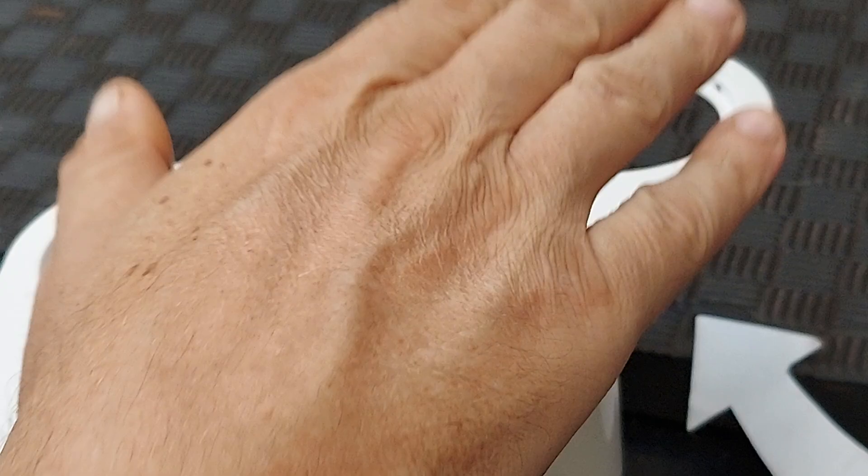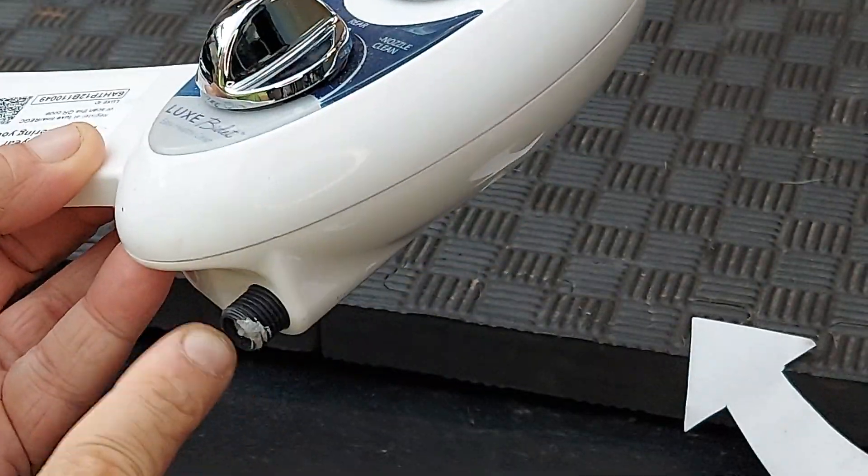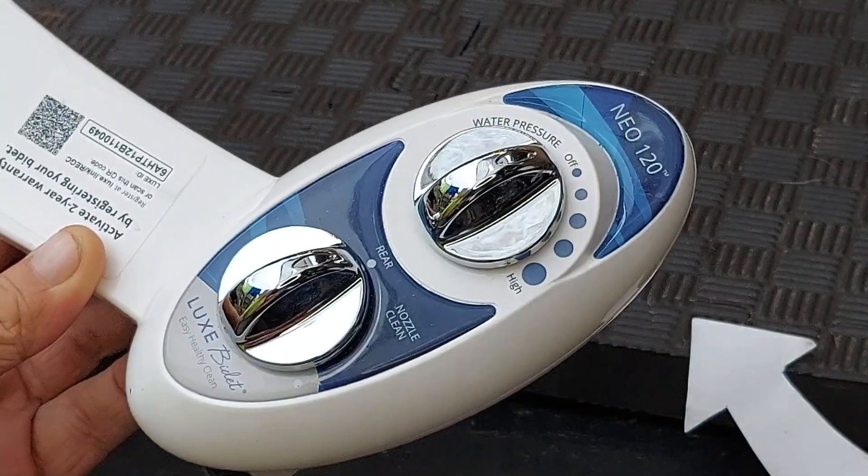You'll just take off your seat, set this in place, put the seat back on, and then it'll tap into your existing waterline that goes to the fixture.